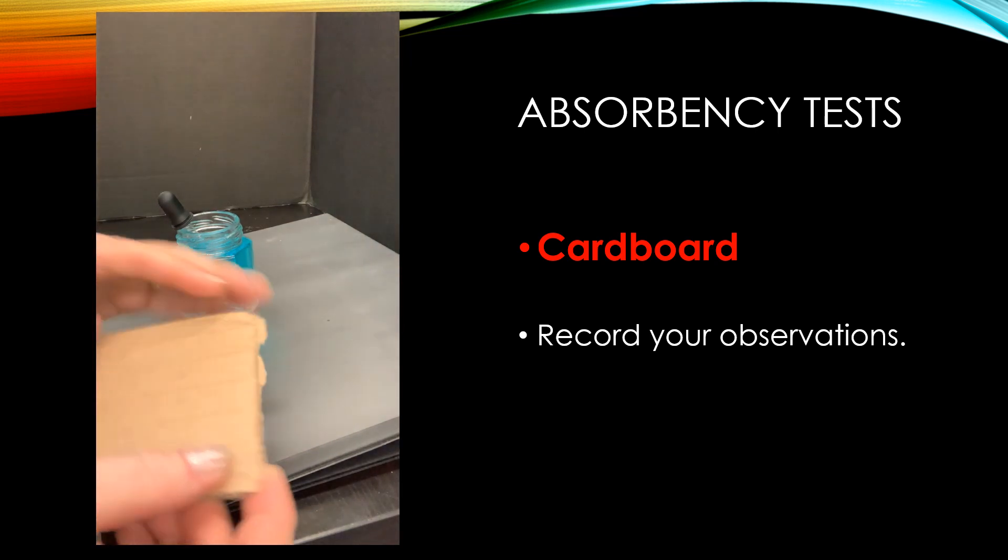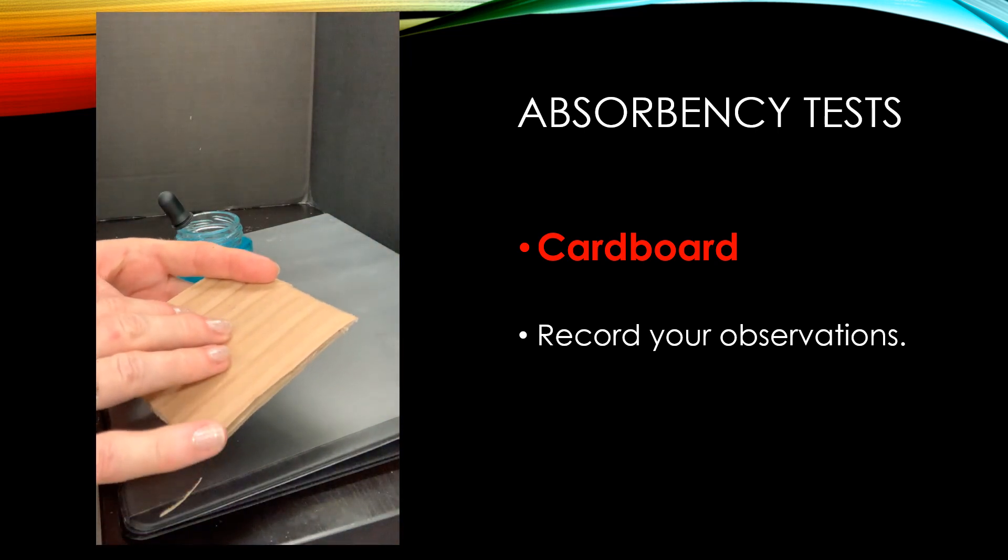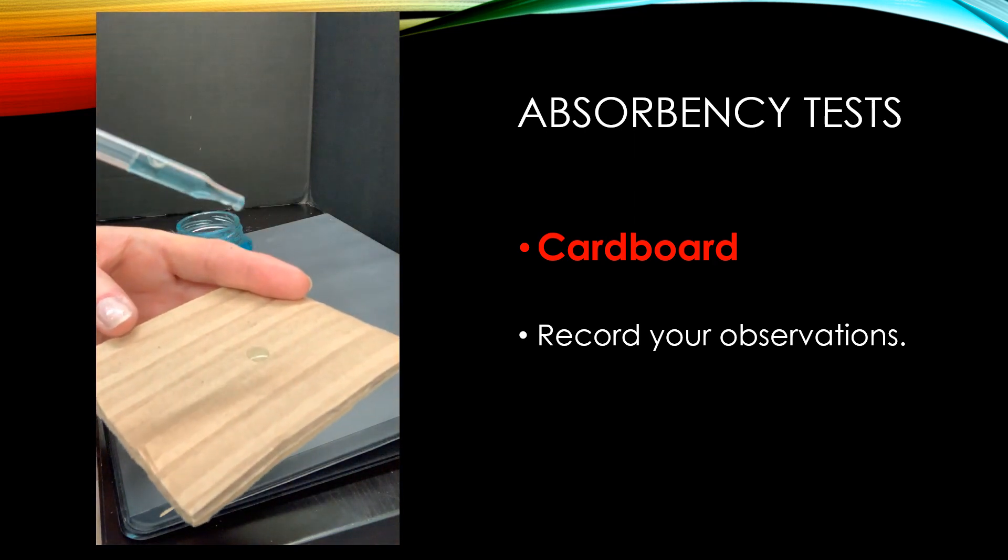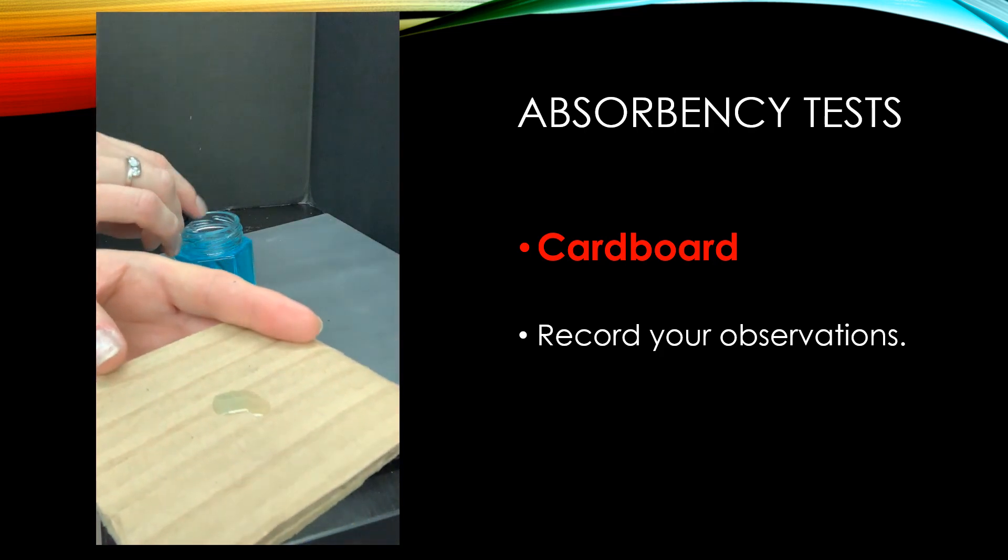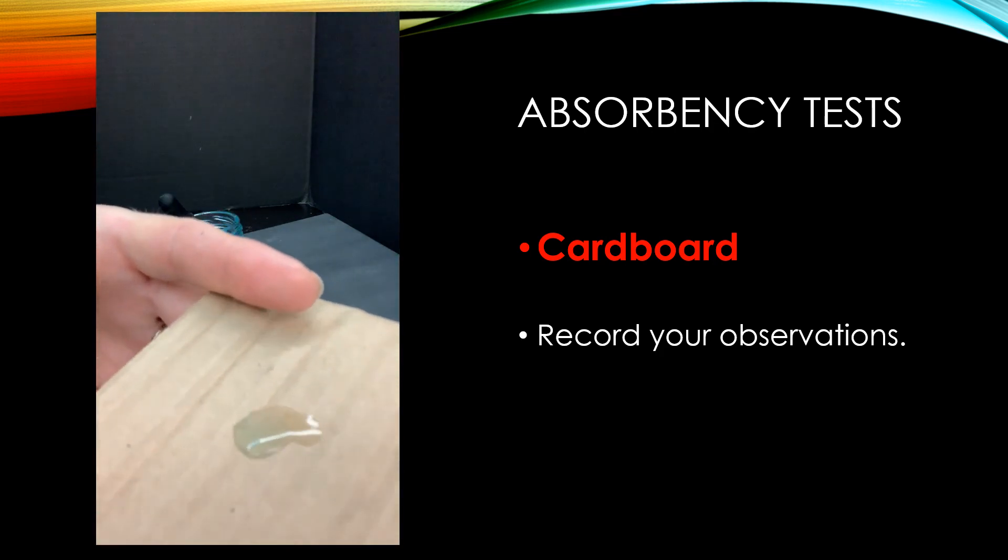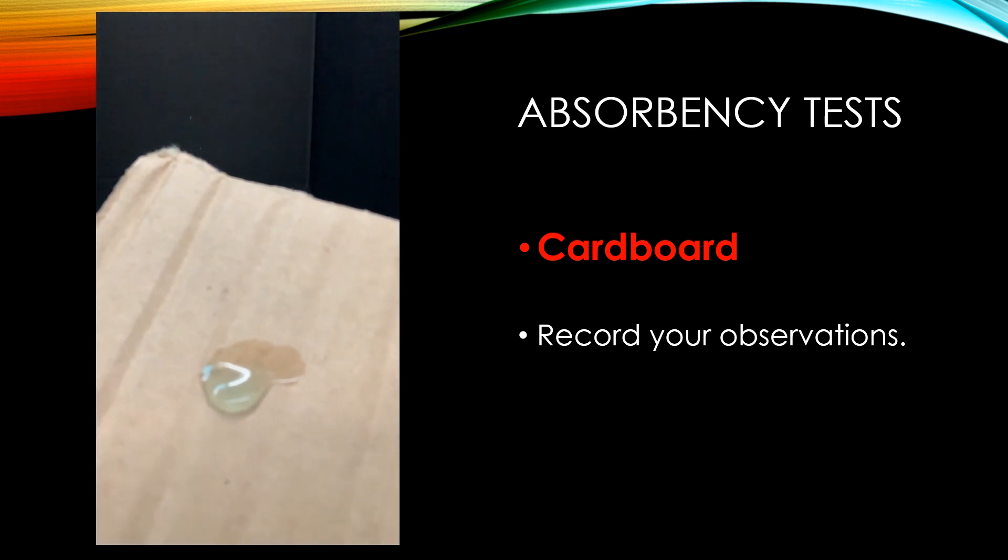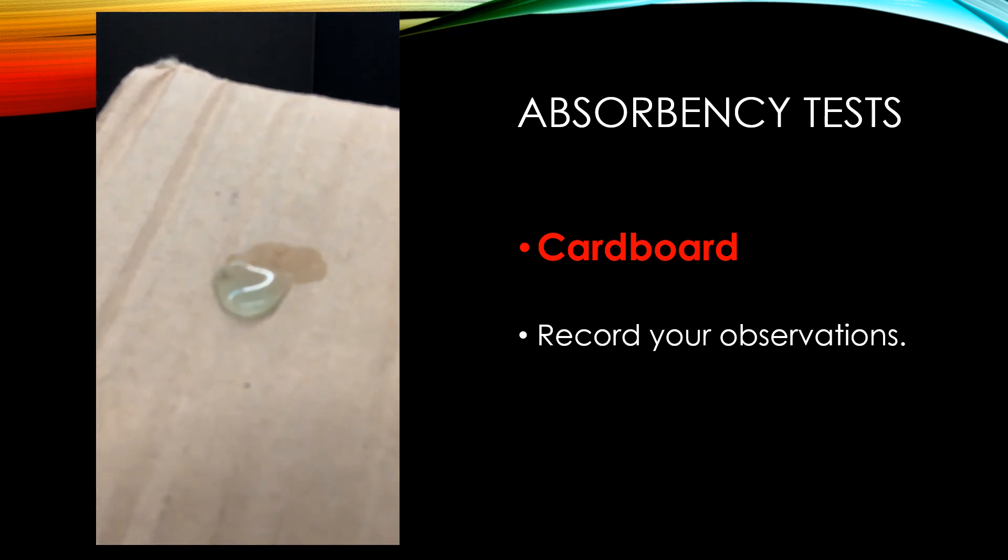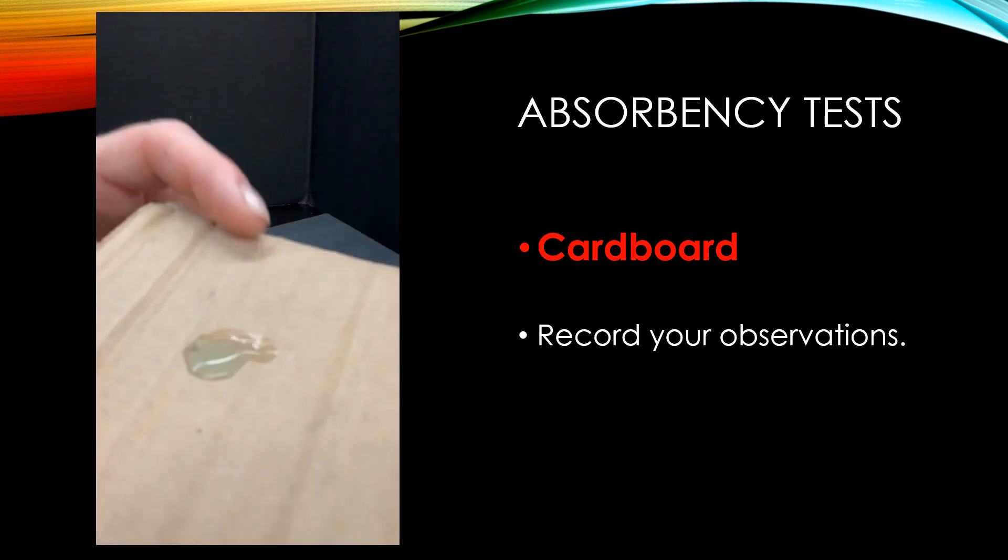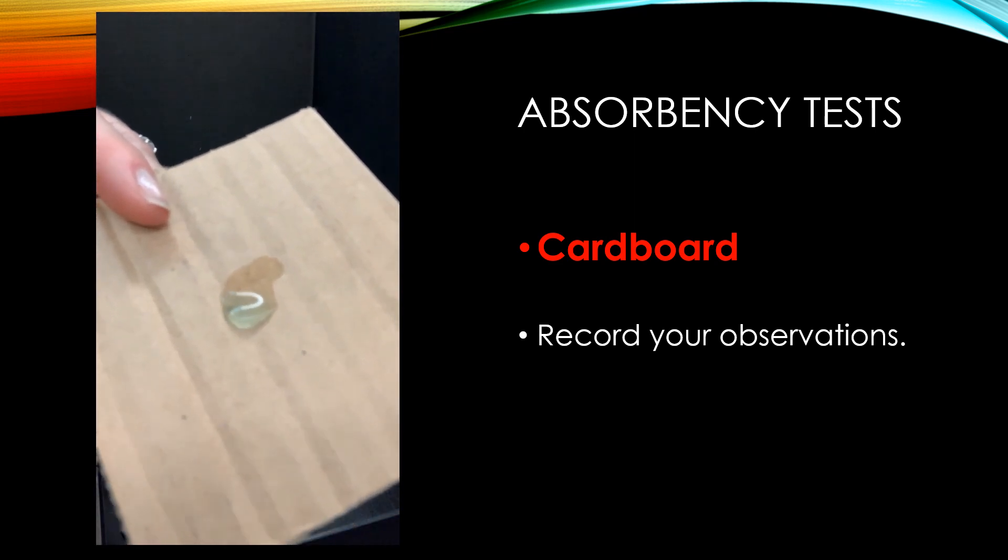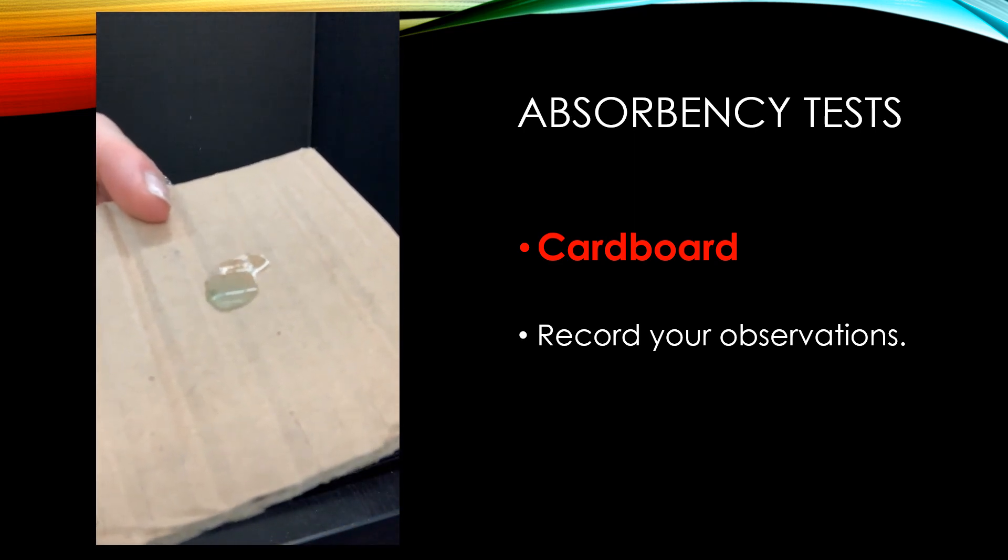Cardboard is next. Now this cardboard has a slight little finish on it. We'll put three little drops on it. One, two, three. And of course, right away you can see it on top. It looks like it's being repelled, but it slowly is changing the color of the cardboard and slowly, slowly being absorbed. And again, if you've ever left a box outside in the rain, you'll know eventually it will absorb all the water. But right now you can see a fair bit is on top. You can see the color slowly changing, but eventually it'll all be absorbed.